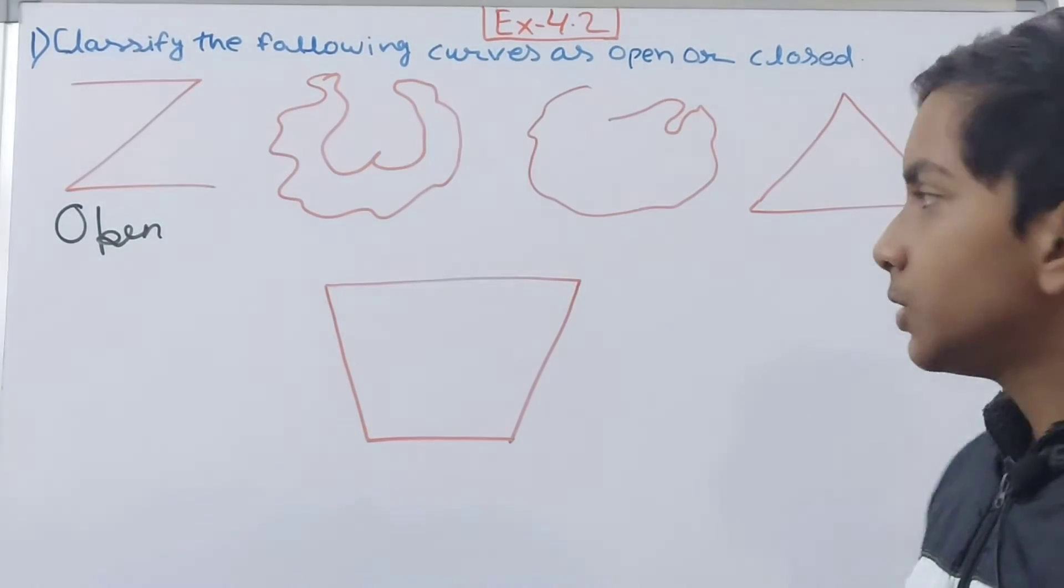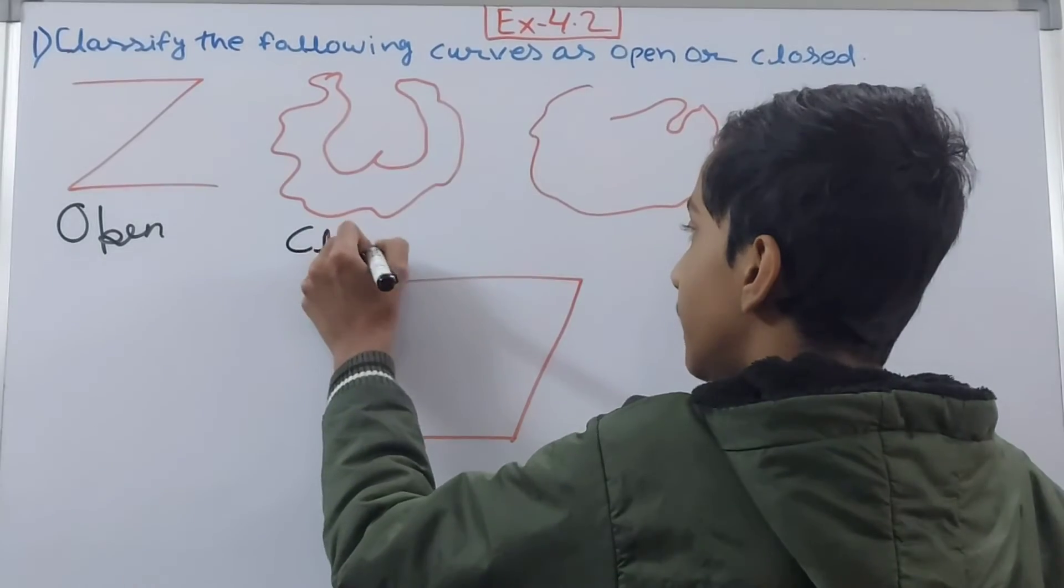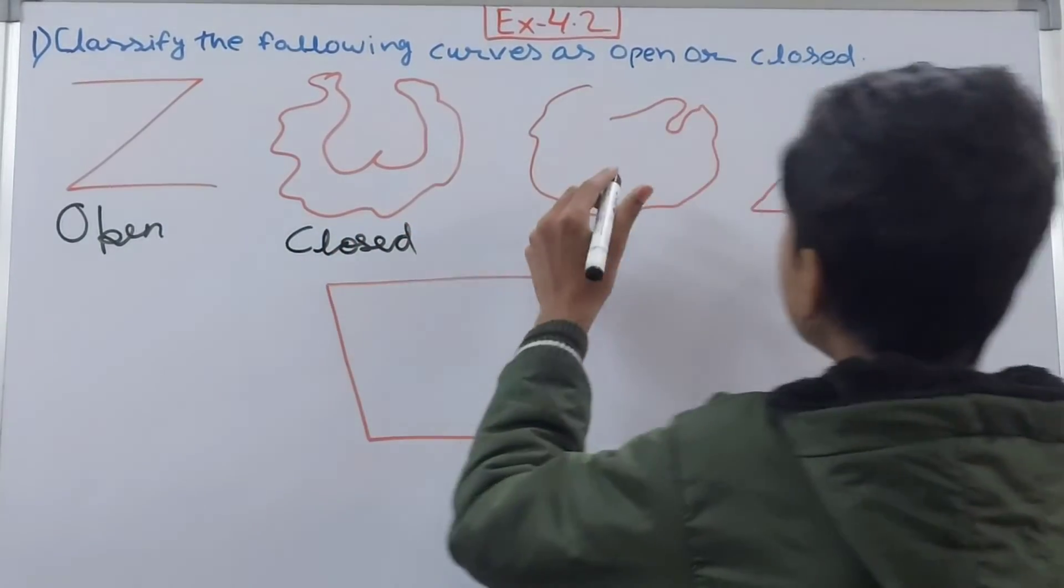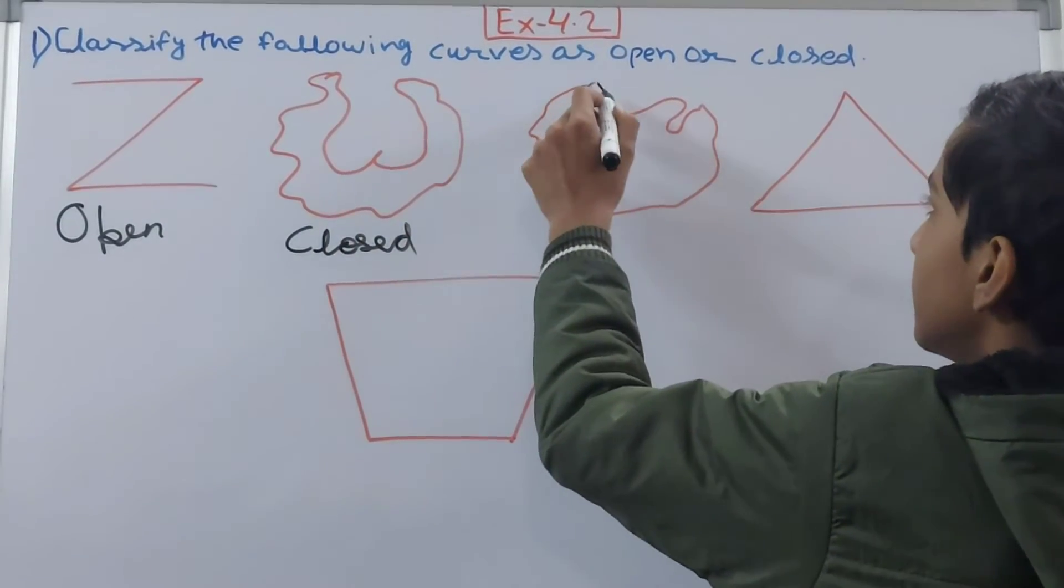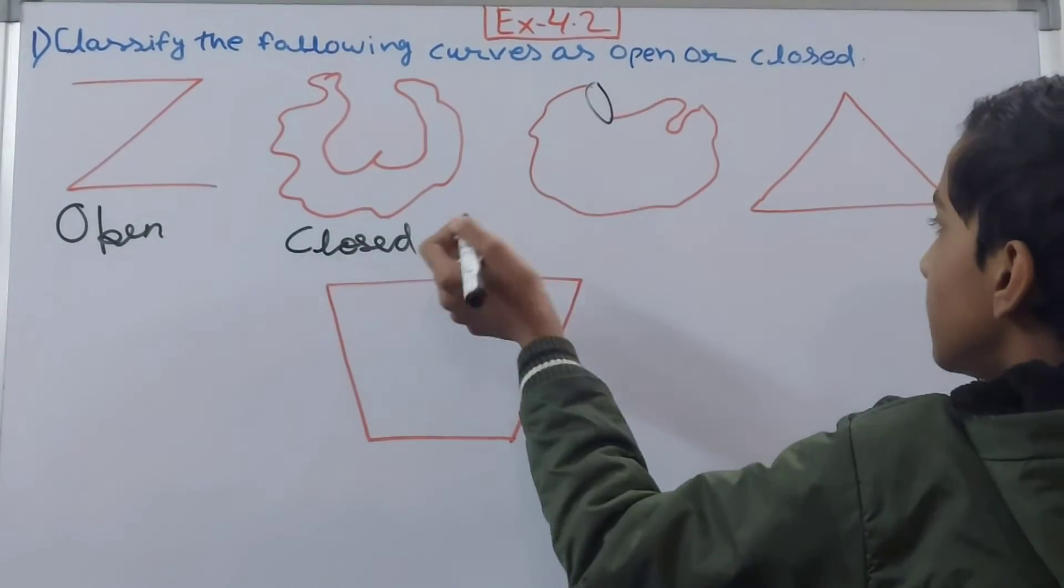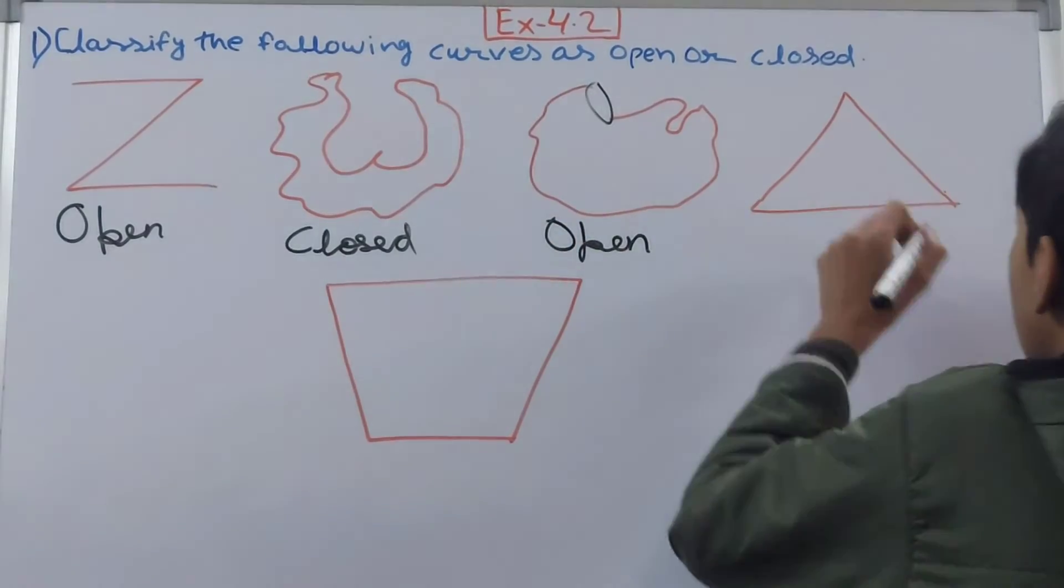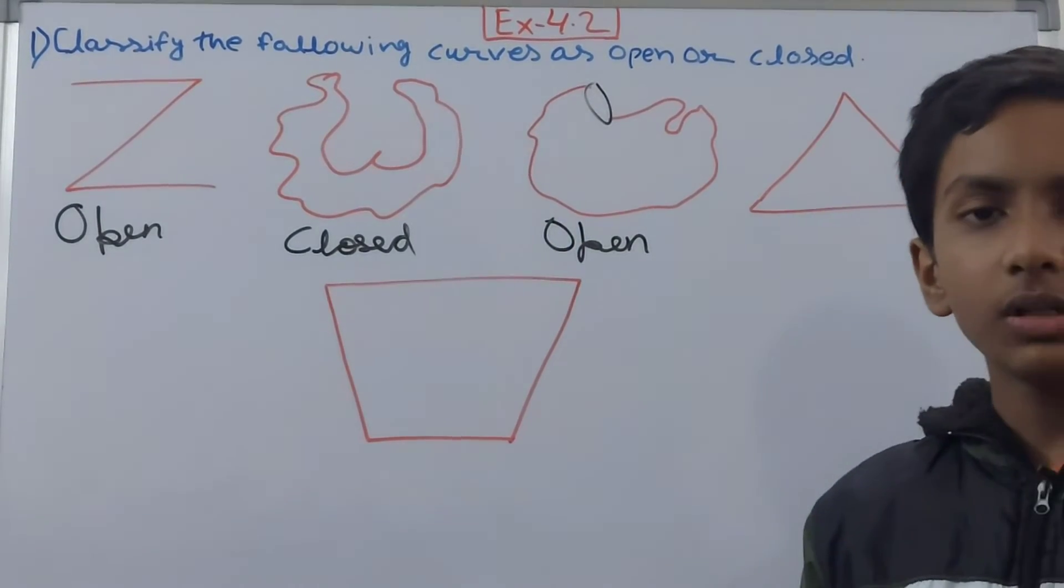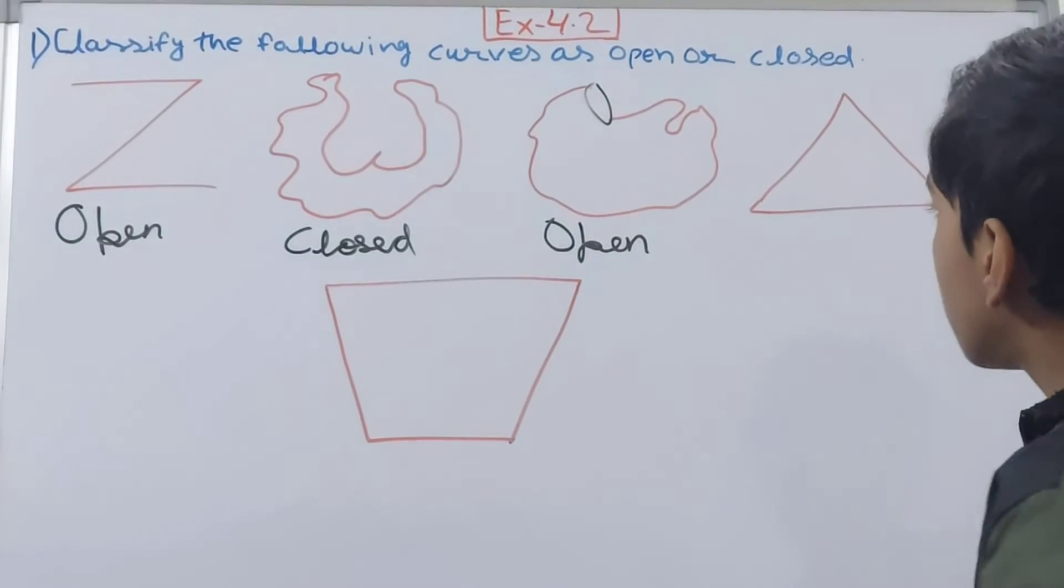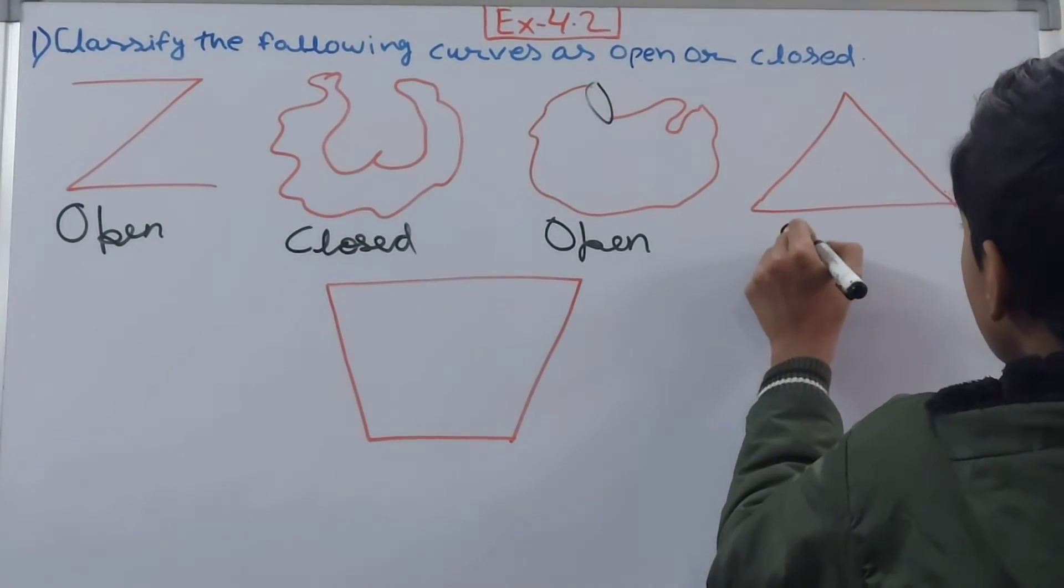Then this. Again you see, this part here is not connected. So that means this is an open curve. Now triangle—triangle also is a closed one because in this also the boundary is complete. So this is closed.